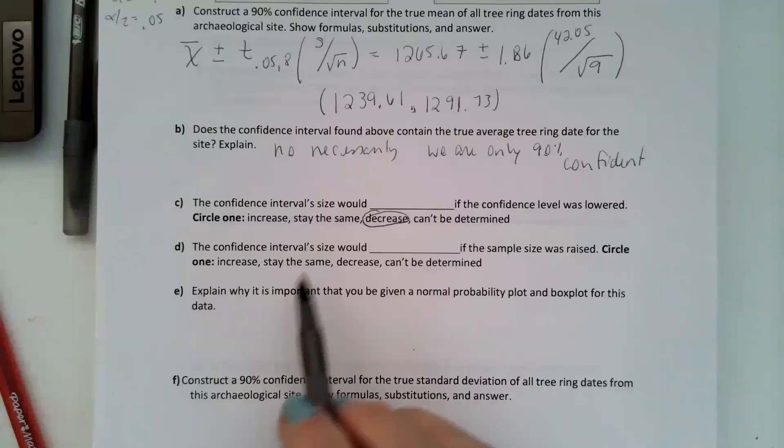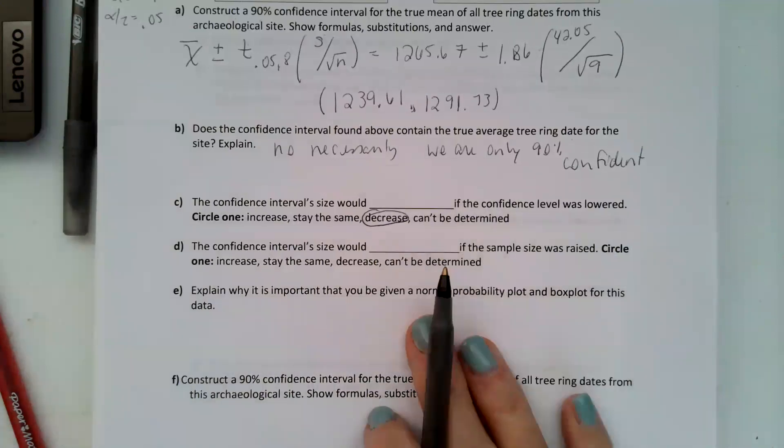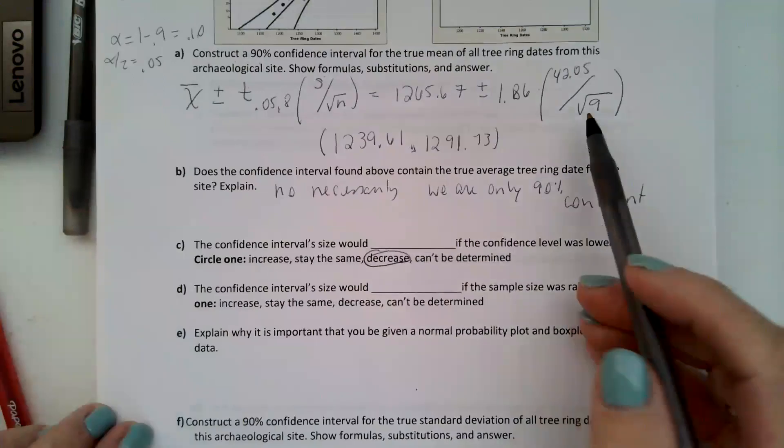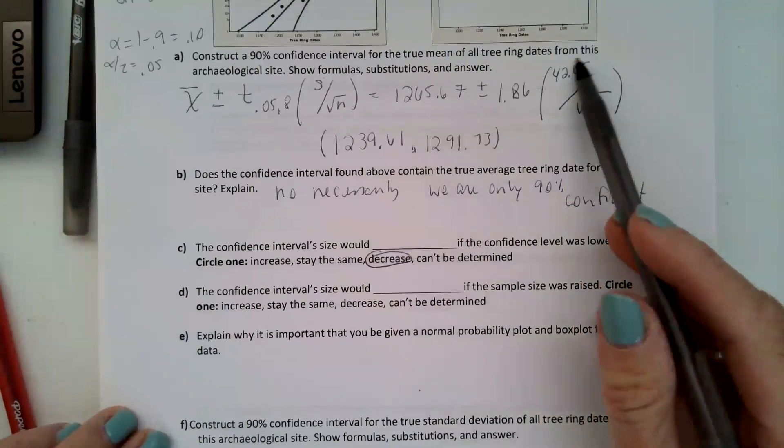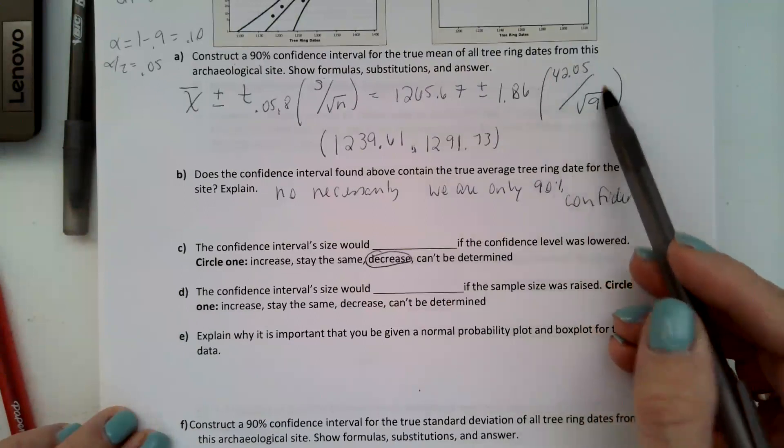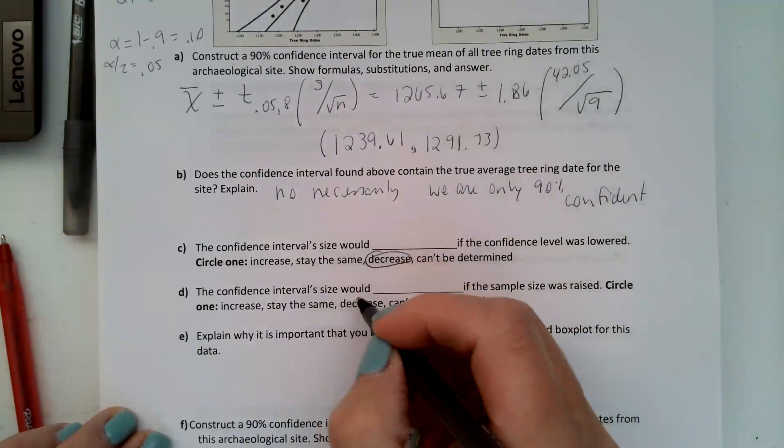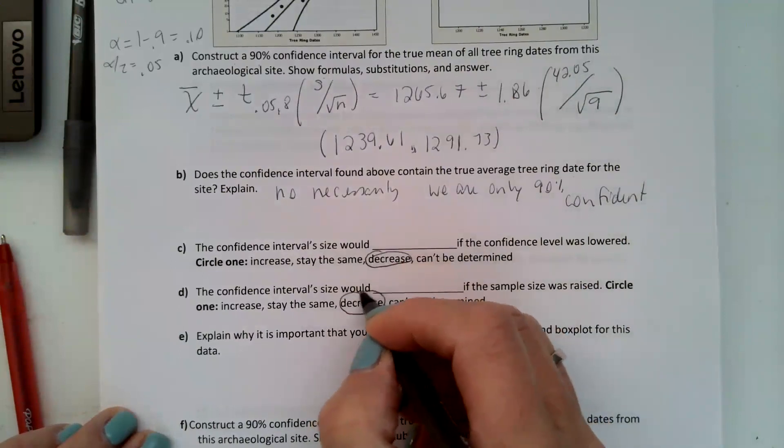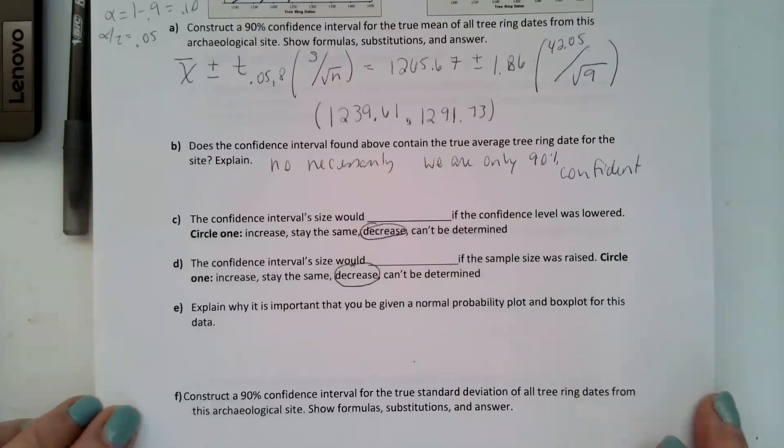What if the confidence interval size would blank if the sample size was raised? Your sample size is in the denominator here so when your denominator gets bigger your fraction gets smaller which means that your error bound will get smaller and that is also going to decrease your interval.